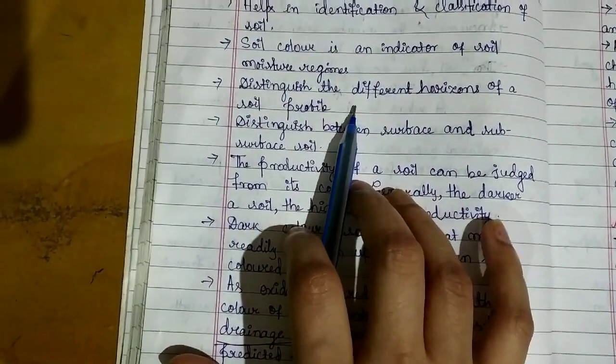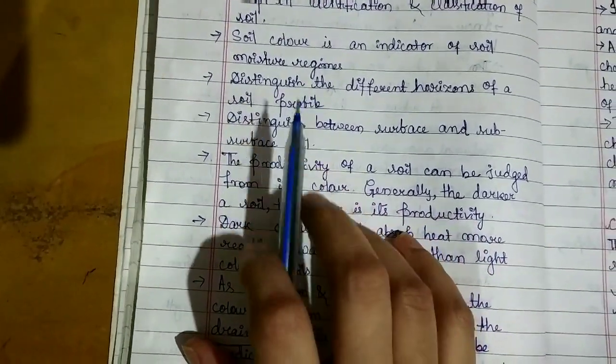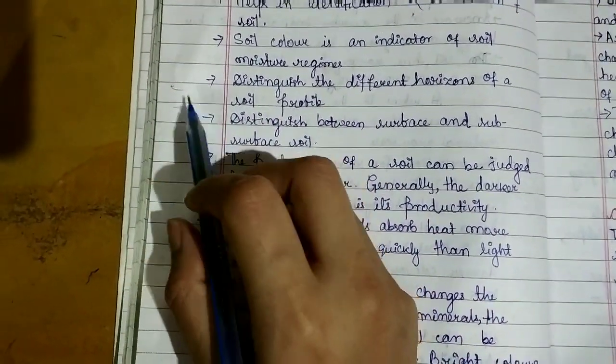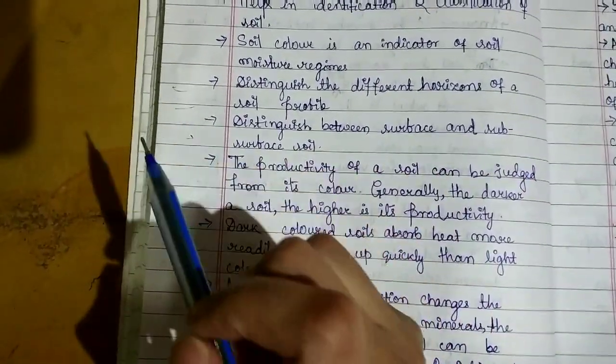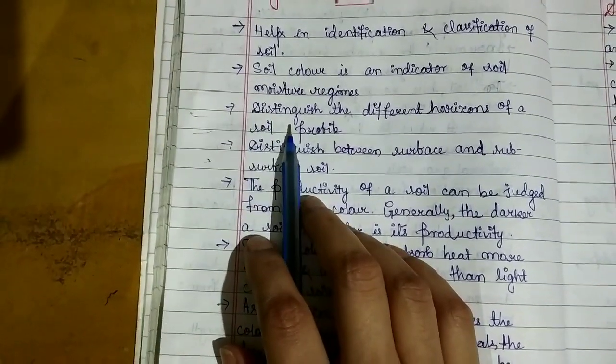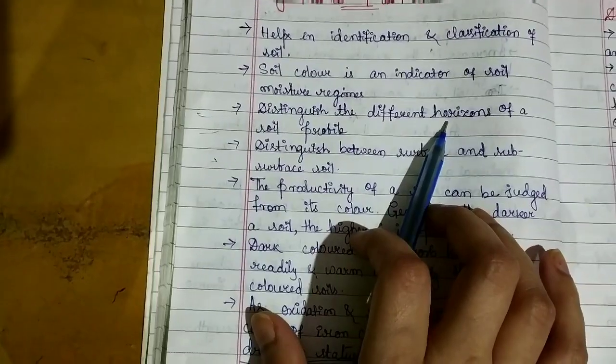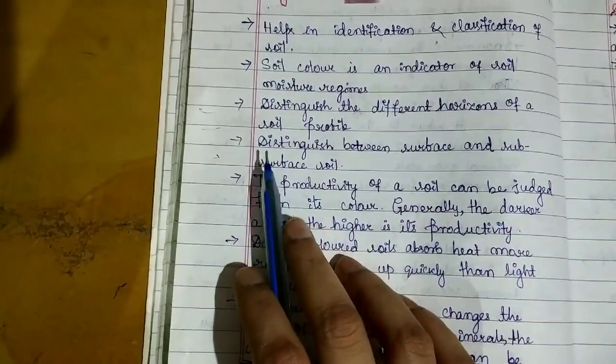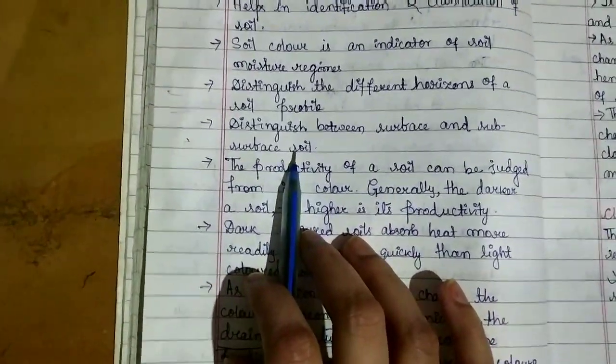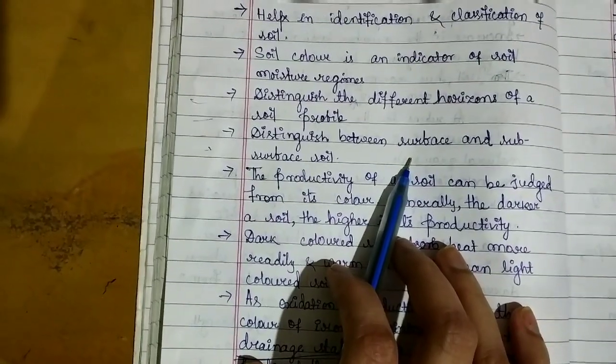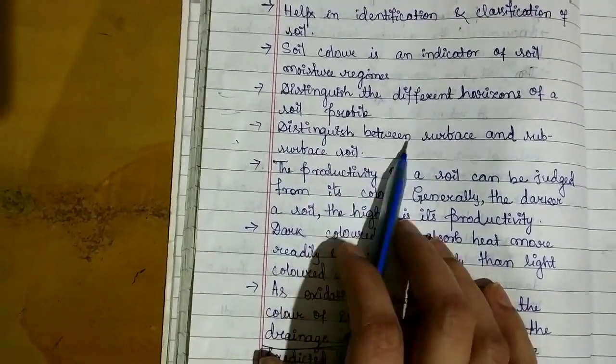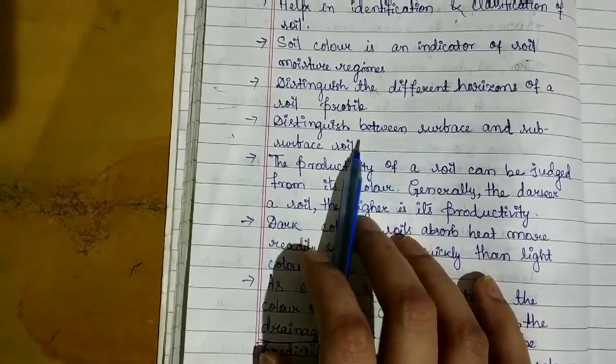It helps distinguish the different horizons of a soil profile. When we check the soil profile, there are different horizons. We know the horizons first from soil color. It is an important parameter, the first and foremost important parameter which helps us see different horizons. It will distinguish between surface and subsurface soil. Surface soil is darker color and subsurface soil is lighter color.